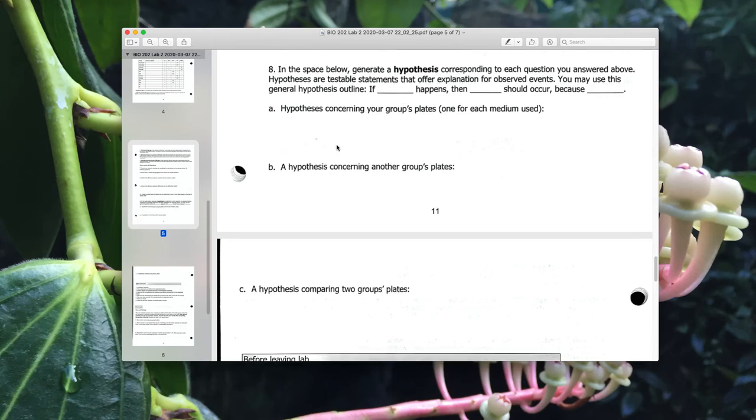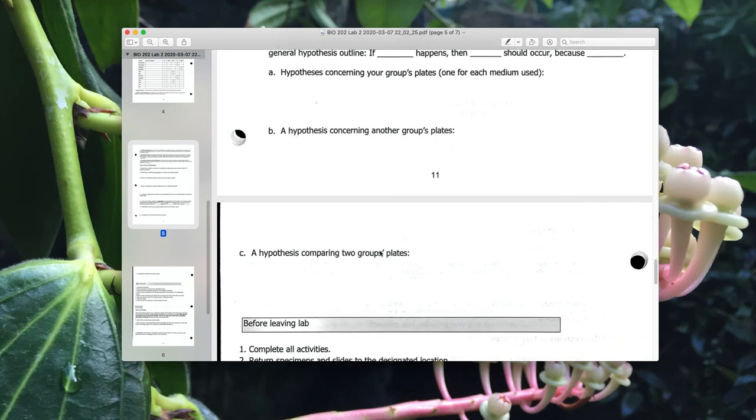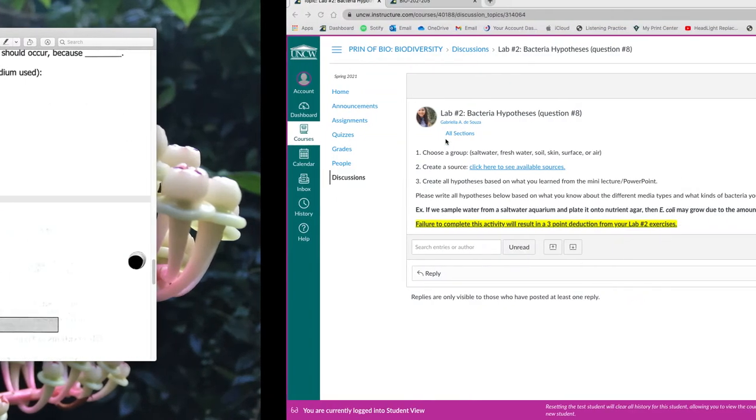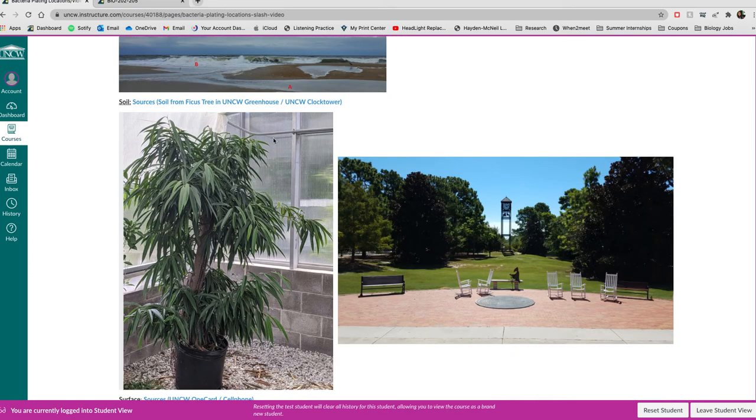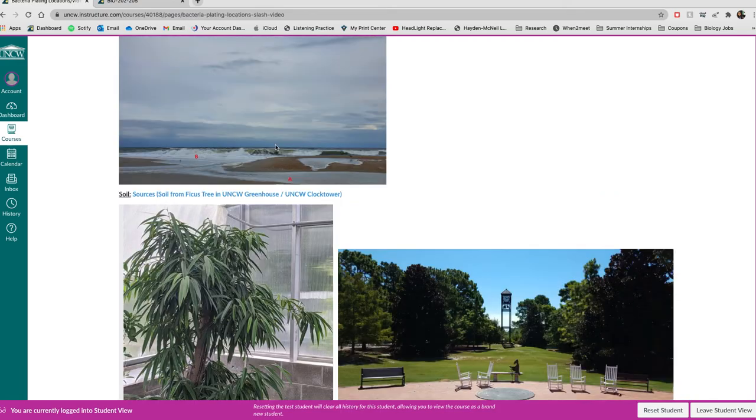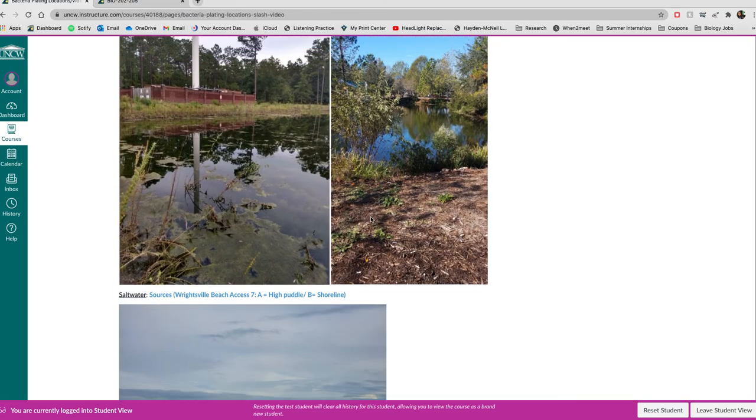Then you're going to write all the hypotheses. Notice how it asks you to write a hypothesis about your group, then write a hypothesis about another group and then compare two groups plates. So you can compare two different sources. If you want, you could compare your own source to another group source. So say I was soil group, I'm going to write two hypotheses about what I think would grow on those plates. If I were to swab or sample soil from a ficus tree or under the clock tower.